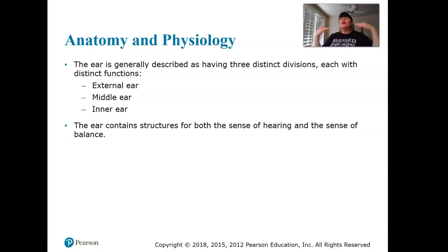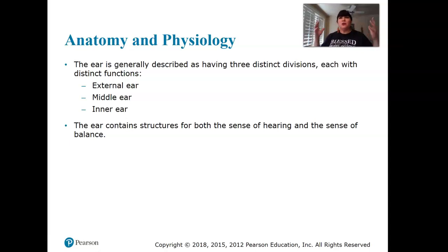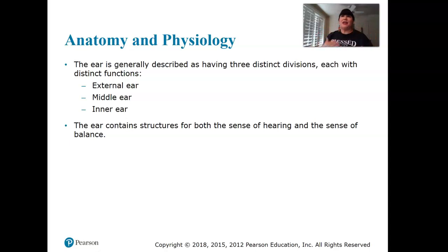Those electrical impulses travel to the brain, and it's in your brain that you actually hear. The ear is not only involved with hearing — it's also involved with balance. Sometimes people can have ear infections and have issues with balance. We have structures in the ear that help us know what's right-side-up when we spin. Sometimes there are genetic conditions where people get vertigo, and that can be issues with the ear.